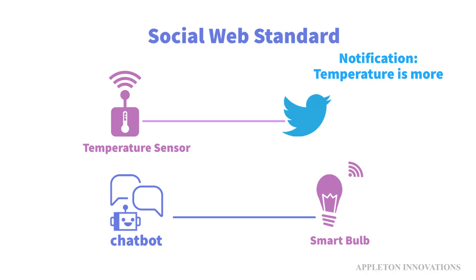The Social Web is a set of social relations that link people through the World Wide Web. Examples of Social Web are Facebook, Twitter, and Instagram. Social Web supports and fosters social interaction.